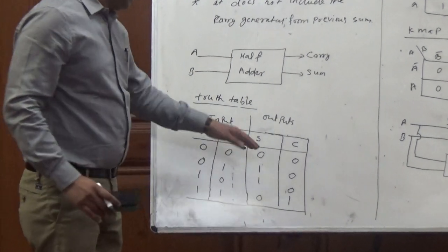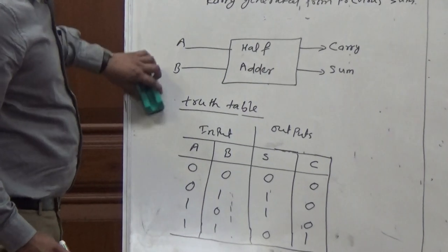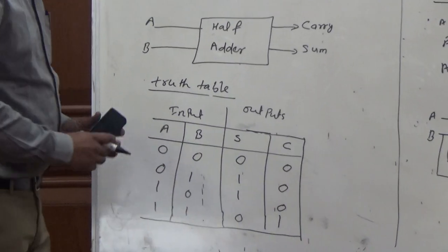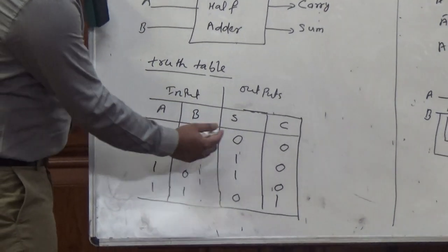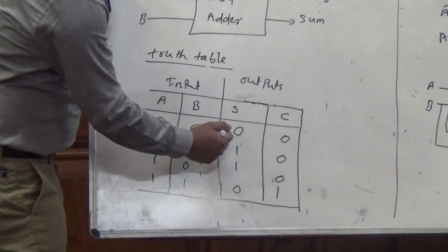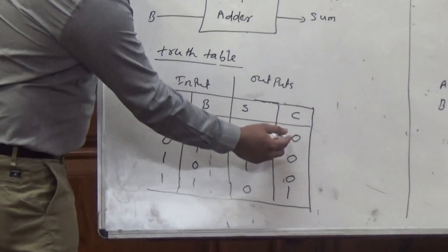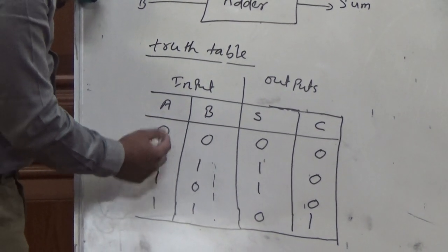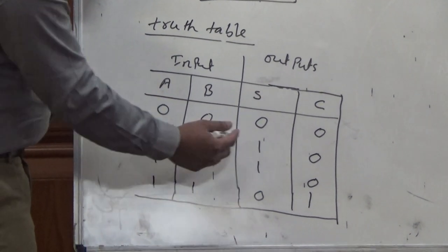We are doing the addition. Sum is the addition of two binary numbers. If we add 0 plus 0, the sum will be 0 and no carry is generated, therefore the carry column will be 0. Here A is 0 and B is 1.